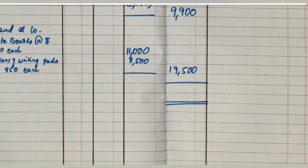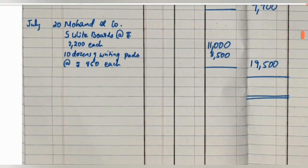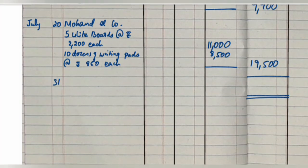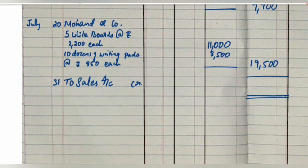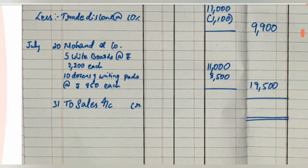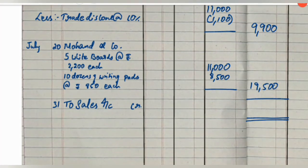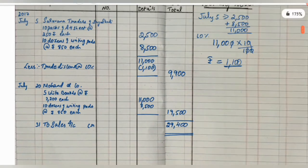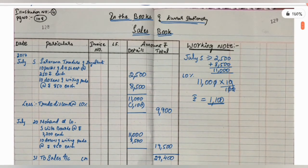Now we have our two totals. Going to July 31st, the Sales Account is credited with the total of the Sales Book. The total is Rs. 29,400 (9,900 + 19,500). We have now finished our Sales Book.